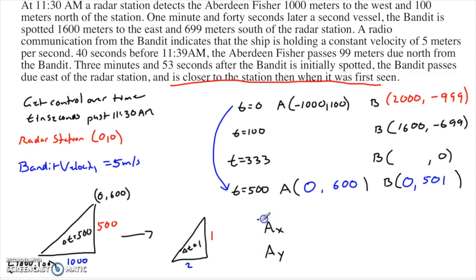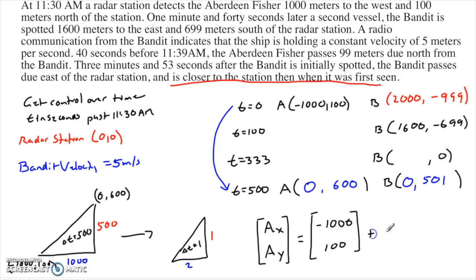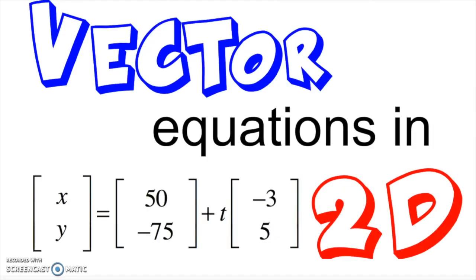Now I can write the vector equation for the Aberdeen Fisher. Position (a_x, a_y) equals the initial position negative 1,000 comma 100 plus t times the velocity vector 2 comma 1. I hope you found that helpful. Now that you've got the setup, head back to the other video — I'll put a link at the bottom. If you enjoyed this video, please give it a like, subscribe, leave a comment, and have a great day!